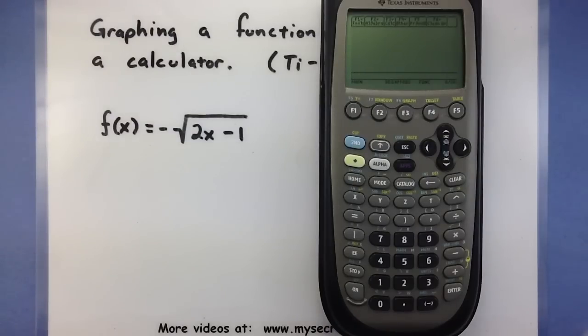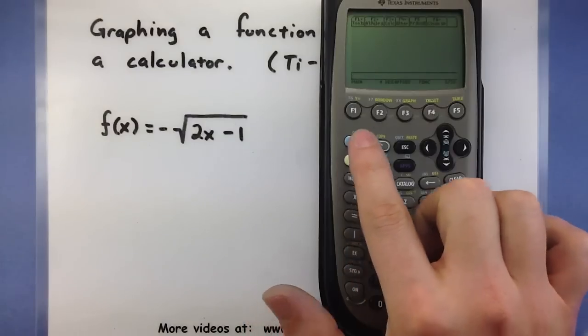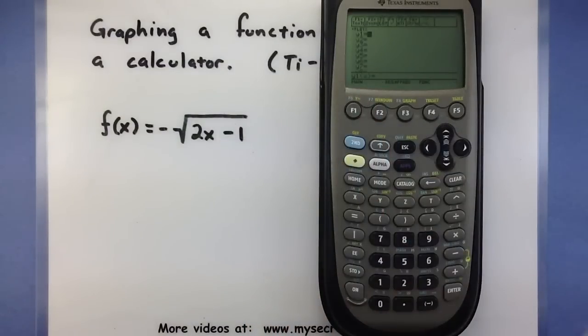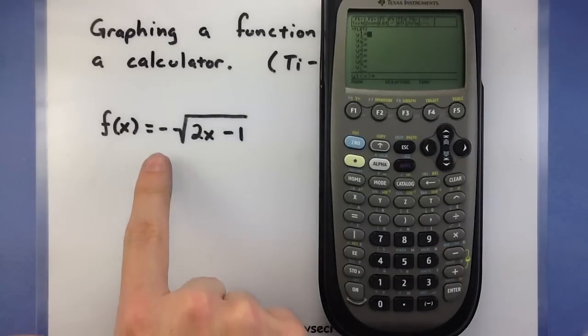Now that we know that our mode is set, let's go ahead and press our green button and F1 to go to the y equals screen. Here's where I will type in the right side of my function.